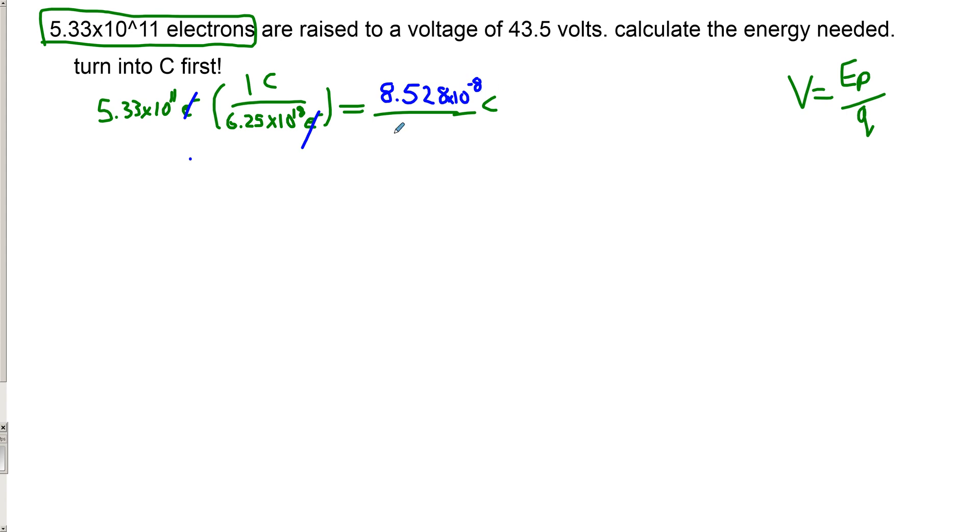Now we can do our actual question. So Ep is what I don't know. Q is a number we do for sure know because we just calculated it, it's the number of coulombs that are here. And then our voltage was 43.5 volts. So our formula, remember, voltage equals Ep divided by q. We're trying to find energy. So that's going to be q times V equals Ep. And now we just plug in our q and our V.